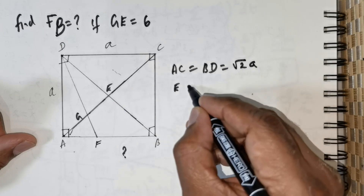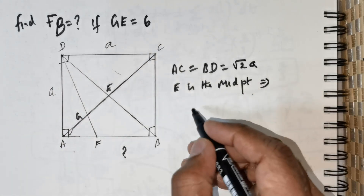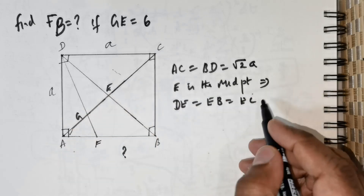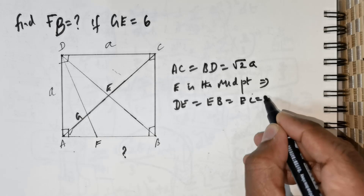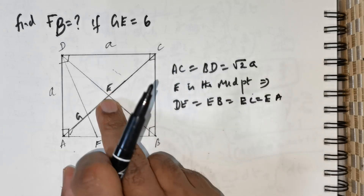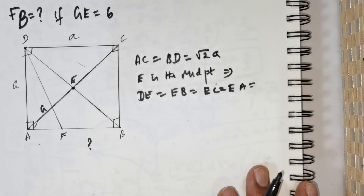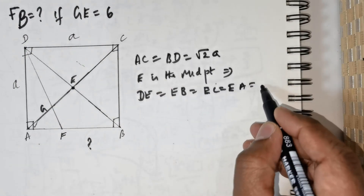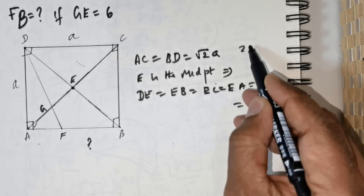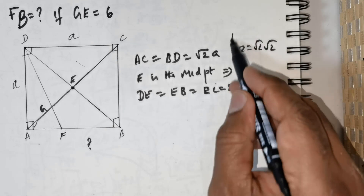We do not know the value of A. Now, E is the midpoint. Since E is the midpoint, this means DE will be equal to EB, which in turn will be equal to EC, which in turn would be equal to EA. So E is exactly in the center, and that means the entire diagonal root 2 times A has to be divided by 2, giving us A over root 2.